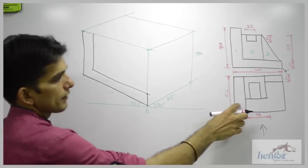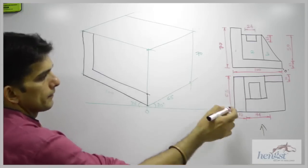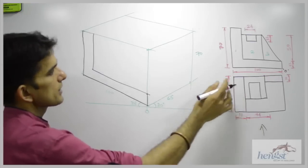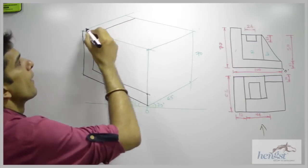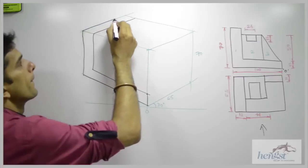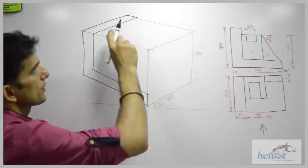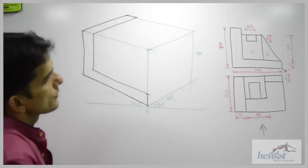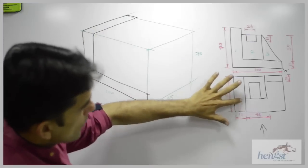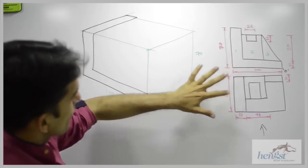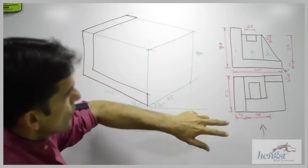Now if you see in the top view, they have given it as full — this part 1 is through and through. This is what I have drawn in the top view and this is what I have drawn in the front view. Now I want to draw part 2.